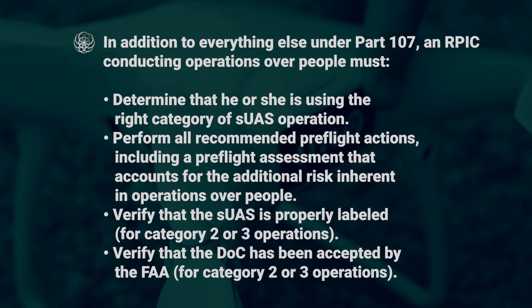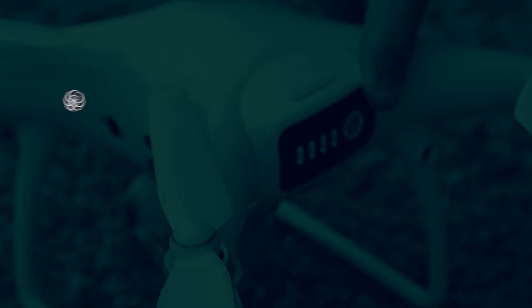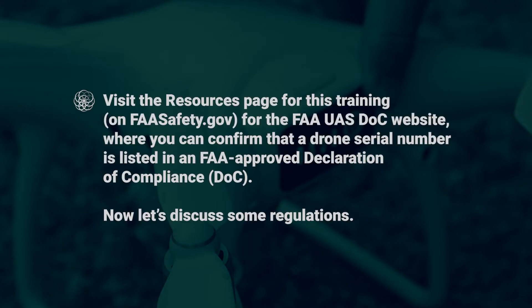In addition to the other operational requirements of Part 107, a remote PIC conducting operations over people must determine that he or she is using the right category of SUAS operation. Perform all recommended pre-flight actions, including a pre-flight assessment that accounts for additional risk inherent in operations over people. Verify that the SUAS is properly labeled for category 2 or 3 operations, and verify that the DOC has been accepted by the FAA for category 2 or 3 operations. Visit the resources page for this training on faasafety.gov for the FAA UAS DOC website, where you can confirm that a UA serial number is listed in an FAA-approved Declaration of Compliance, or DOC.